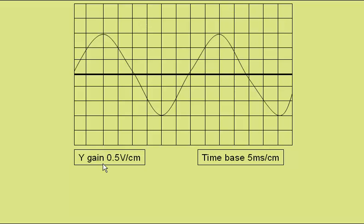What is important is the time base. This one is set to 5 milliseconds per centimetre, meaning that the line takes 5 milliseconds to travel 1 centimetre or 1 square.